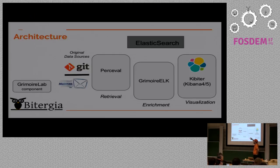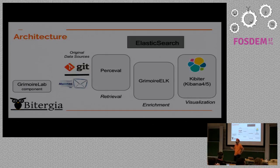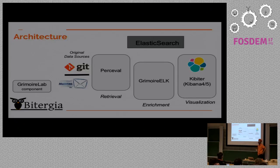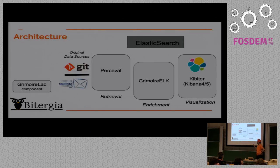Then we have GrimoireElk. GrimoireElk takes those raw indexes with all the information and produces indices specific for Kibana. Basically those are summaries of the activity, and we try to produce information we want to represent in Kibana. GrimoireElk stores the new index in Elasticsearch, and in the end we have a soft fork of Kibana which we call Kibira, which gets information from Elasticsearch and produces what you saw in the first part of the talk.